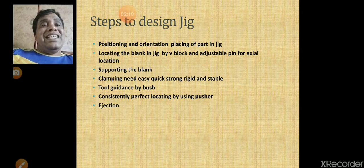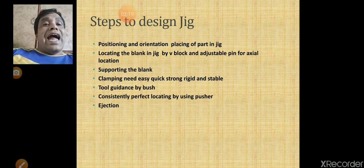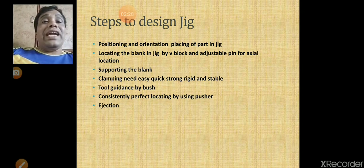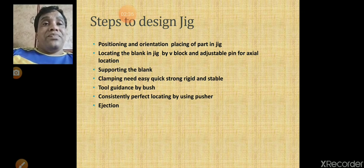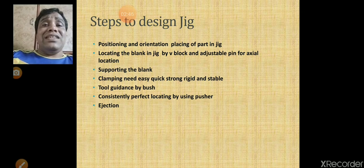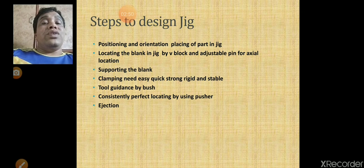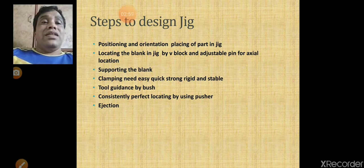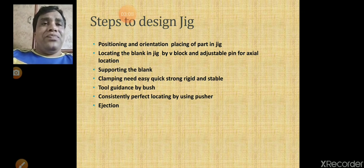Now we will see the steps to design the jig. First step: positioning and orientation of the workpiece with respect to the jig — how you are going to place the job inside the jig, whether its axis is horizontal, vertical, or inclined. Second step: locating the blank or part in the jig — how you are going to locate that part.